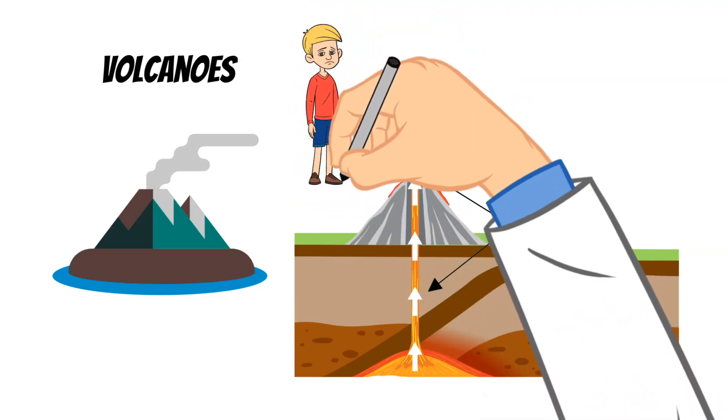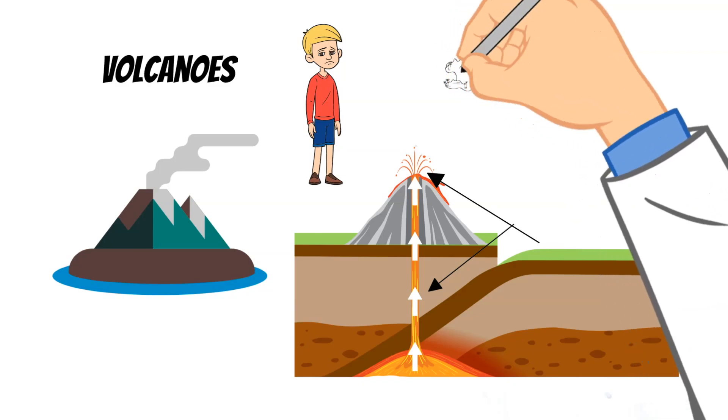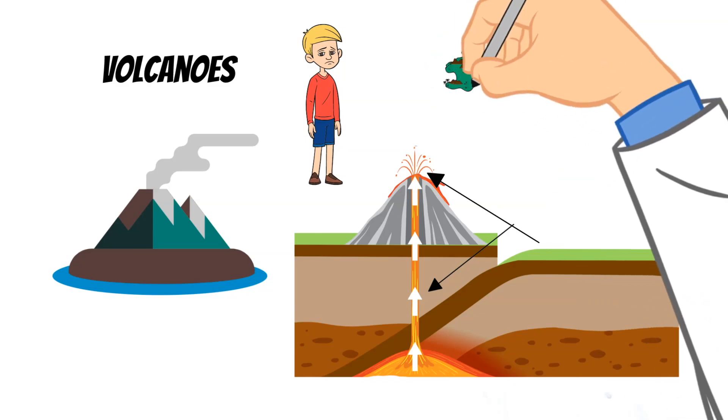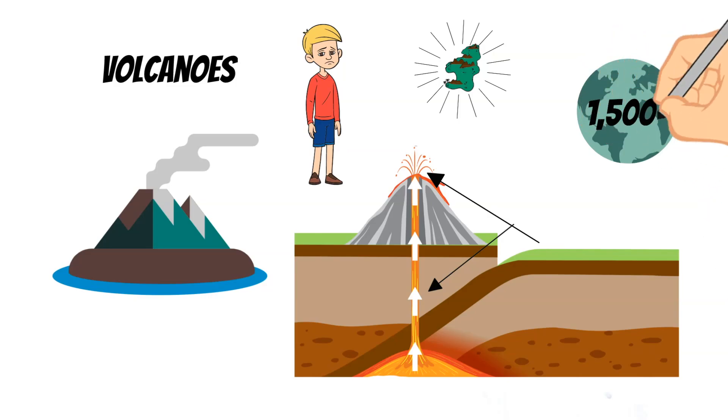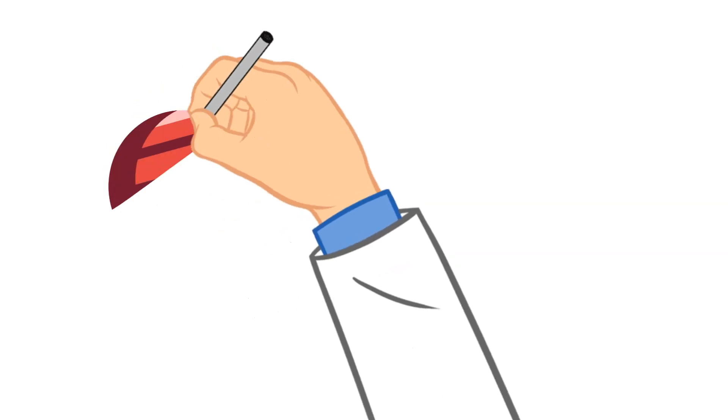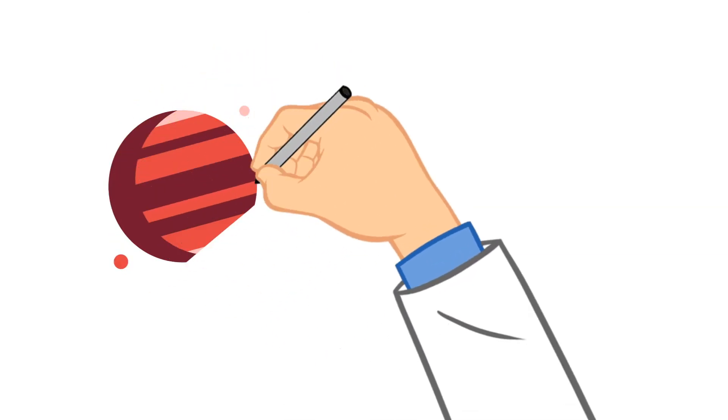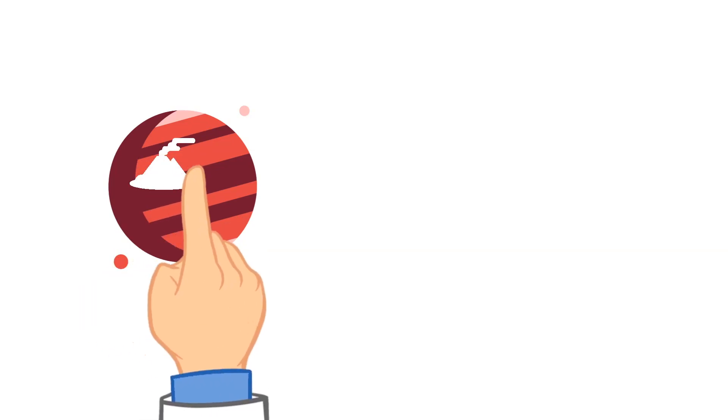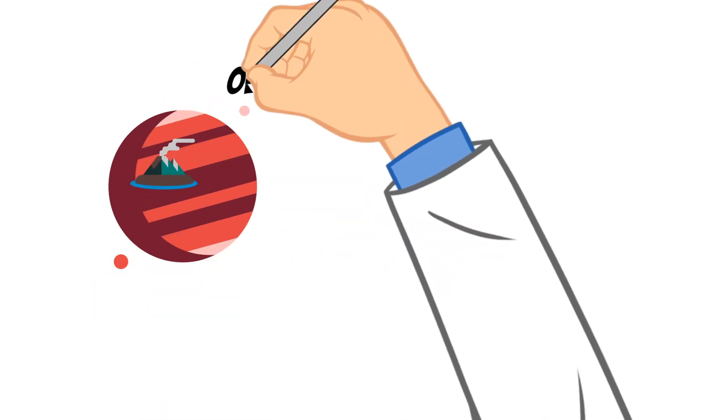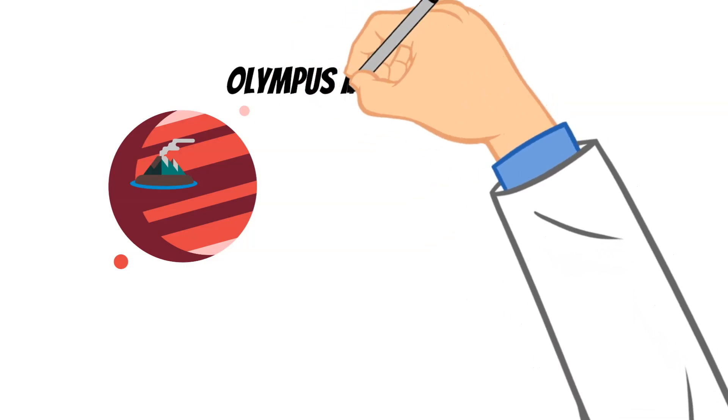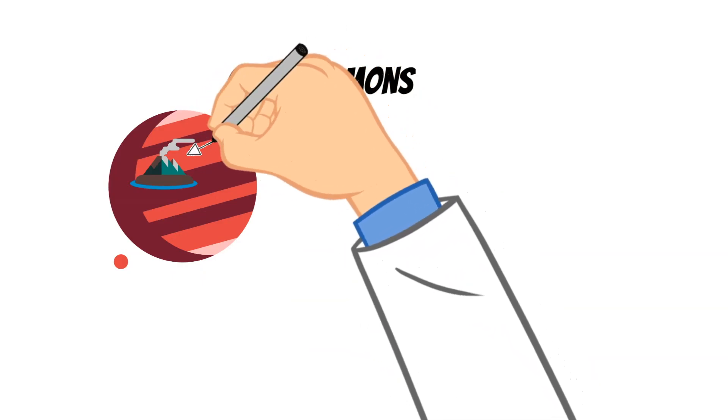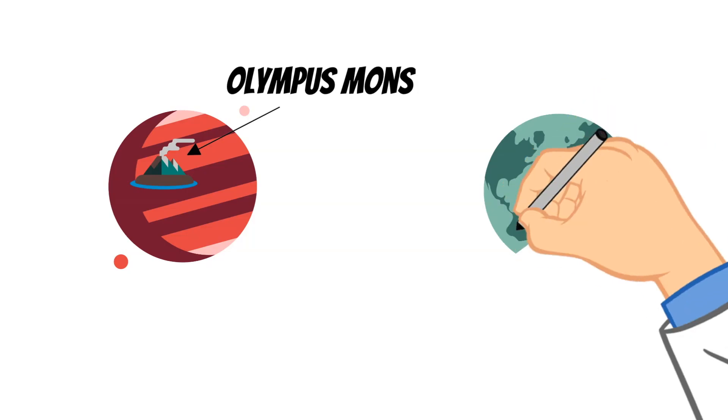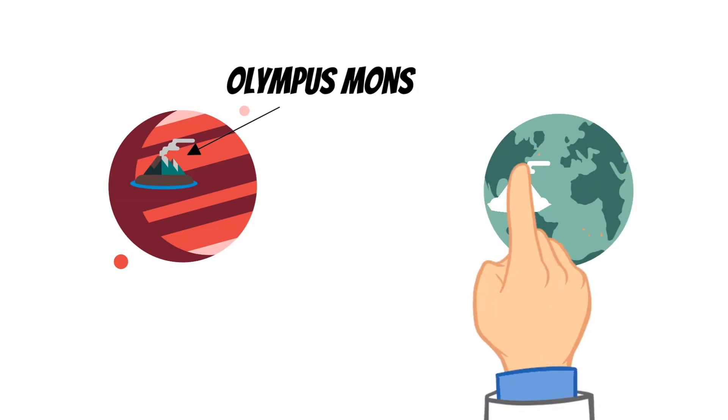Sadly, volcanic eruptions can be and have been very destructive, but they can also create new landforms. There are about 1500 potentially active volcanoes in the world today. And the tallest volcano that we know of in our whole solar system is not on earth, but it is on Mars. And the name of this volcano is Olympus Mons, and it is actually 17 miles tall. Now the largest volcano on earth is located in Hawaii on the big island and it's called Mauna Loa.